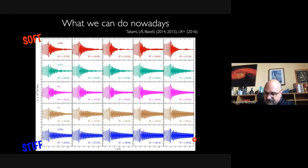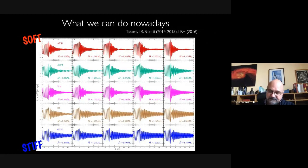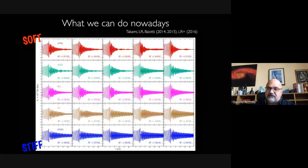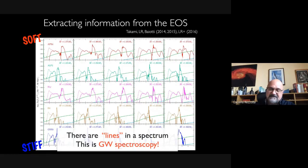If you understand this plot in time and Fourier transform it, you obtain the same representation in Fourier space. There are peaks — spectral lines. That is why I call it gravitational wave spectroscopy: you can study lines in a spectrum to understand the properties of the source. That's what spectroscopy is all about. So we can do gravitational wave spectroscopy.